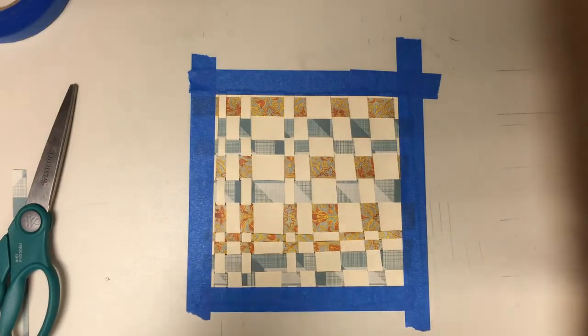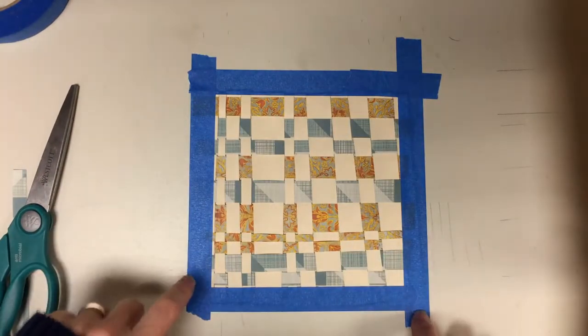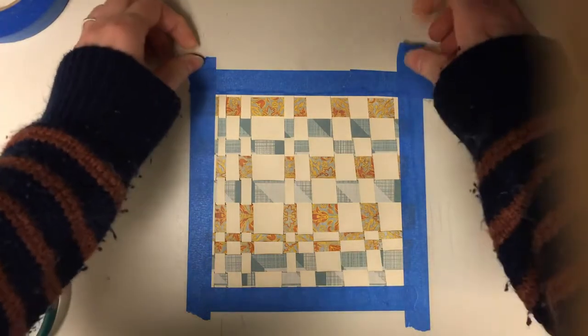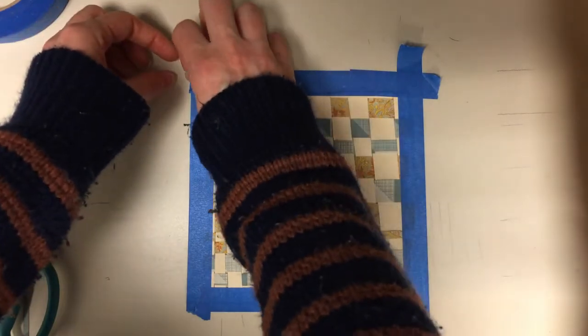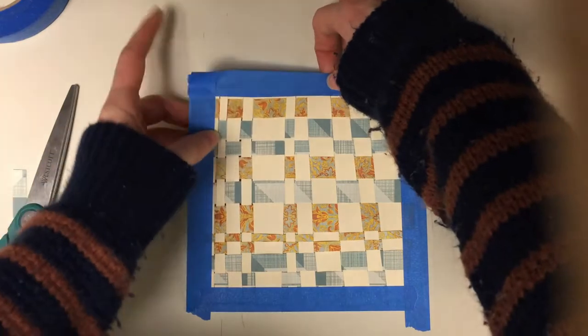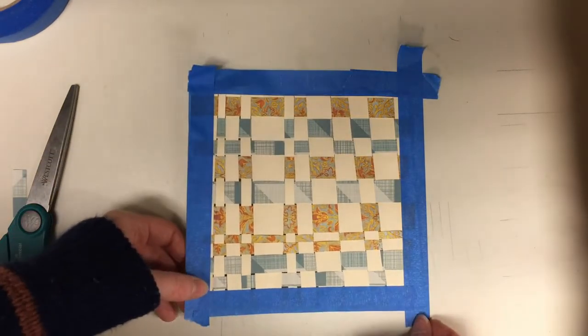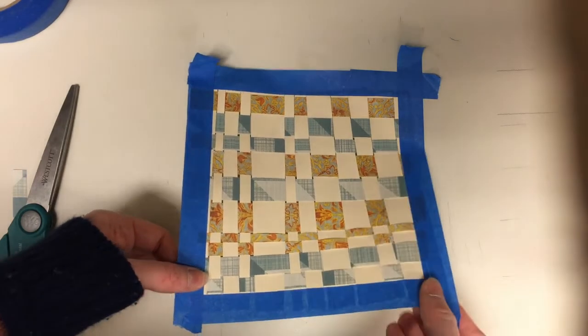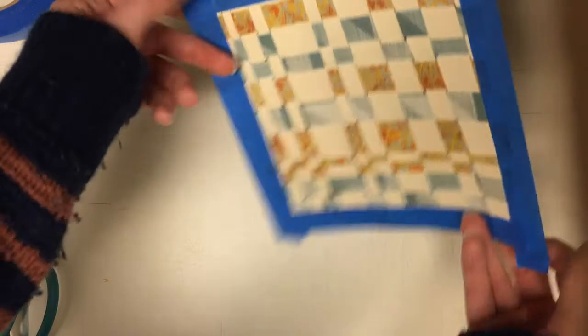One thing I did do to make it easier on myself to photograph this and get this up is I taped it down to my surface. I can very easily pull this tape off and fold it over to the back of my piece. Now I have to be very careful to not pull the paper off of the tape, but to pull the tape off of my table.